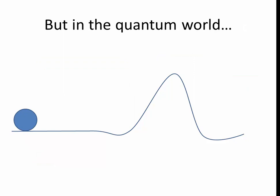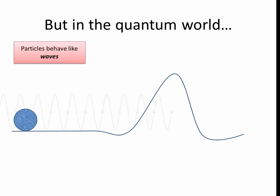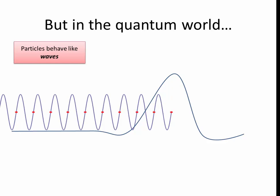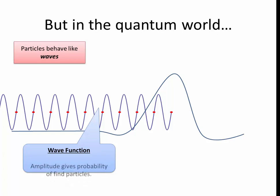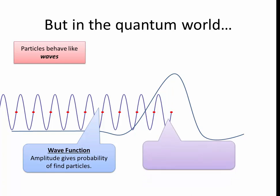But in the quantum world, we have a particle with a similar kind of barrier. Particles behave like waves, so the particle is replaced by this wave. This is the way we can look at it, as a wave function. Remember, the amplitude gives the probability of finding the particle in this area. But this wave function actually extends beyond the barrier, and it's called quantum tunneling.